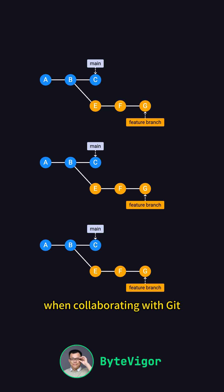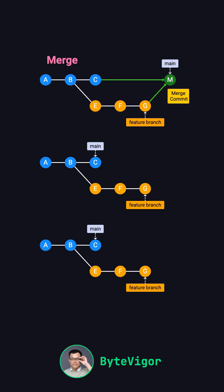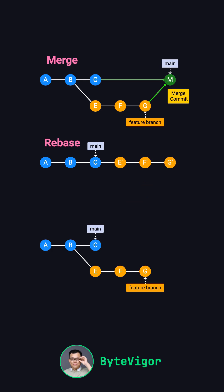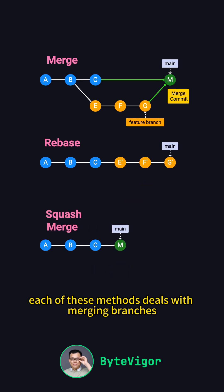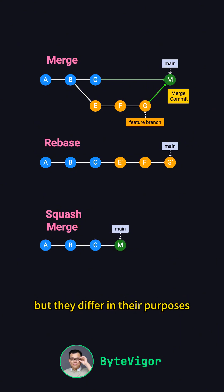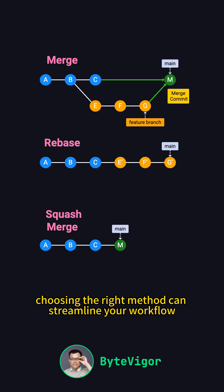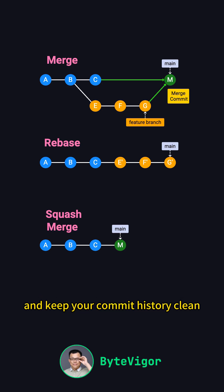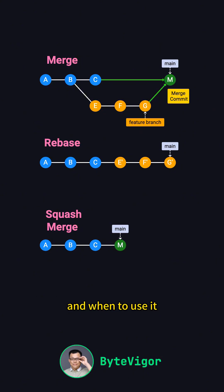When collaborating with Git, you'll often use commands like Merge, Rebase, and Squash. Each of these methods deals with merging branches, but they differ in their purposes, advantages, and points to watch out for. Choosing the right method can streamline your workflow and keep your commit history clean. Today, let's take a quick look at what each method does and when to use it.